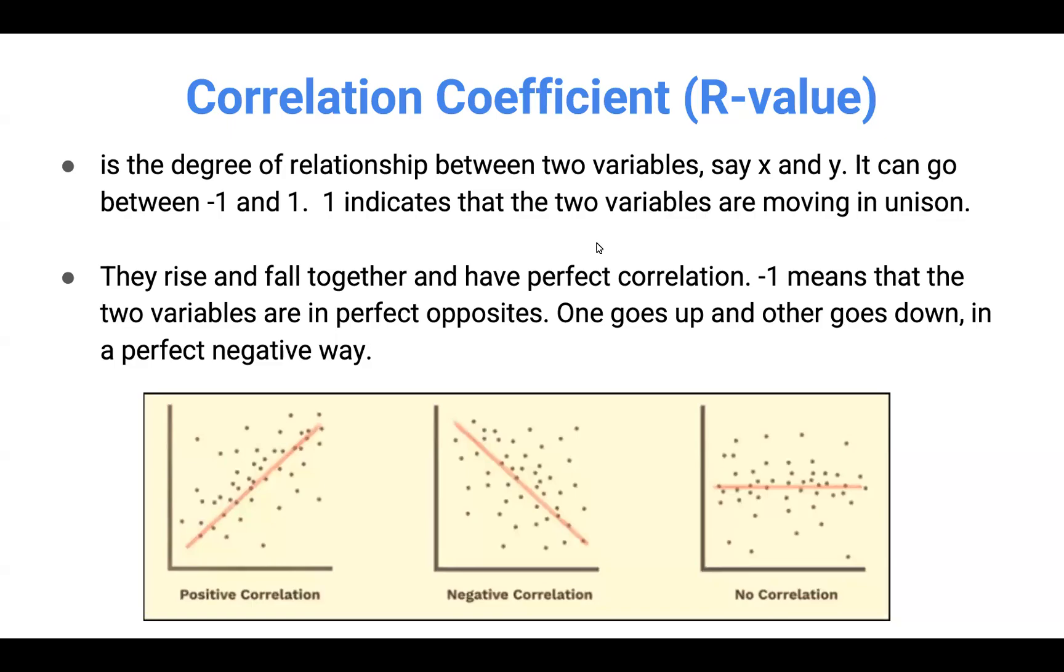Now, before we look at coefficient of determination, or R squared, let's look at correlation coefficient. Regardless of whether you're using Weka, Python, or R, the coefficient of correlation will be given as a summary in your regression output.